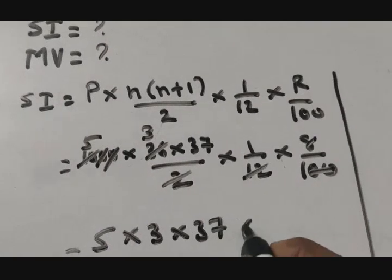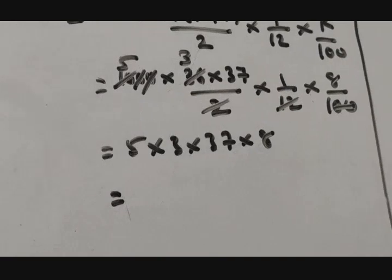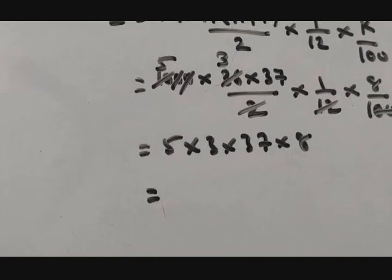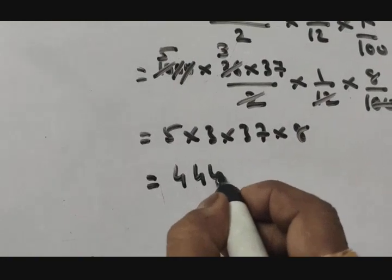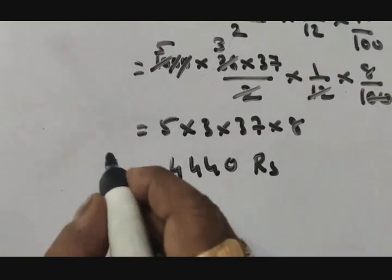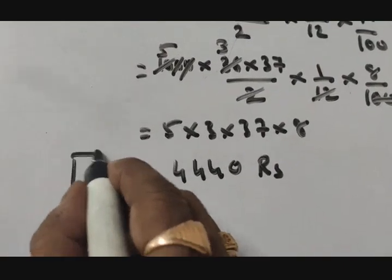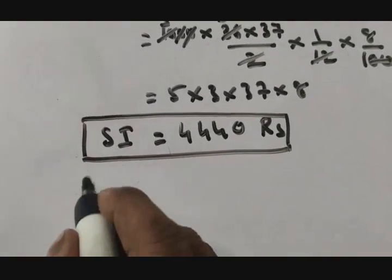What is remaining? You are having 5 multiply by 3 multiply by 37 multiply by 8. So if you multiply, you will get 4440 rupees. This is your simple interest, so make a box there so you can identify where is your simple interest.